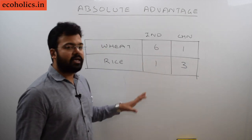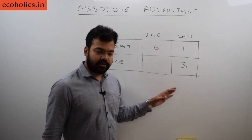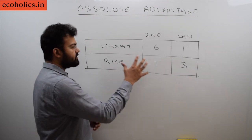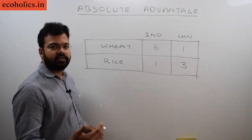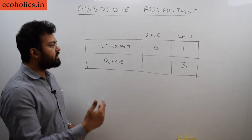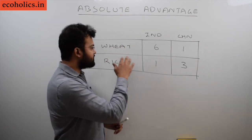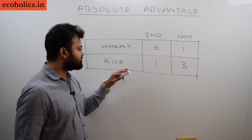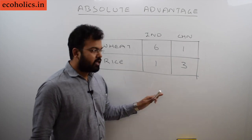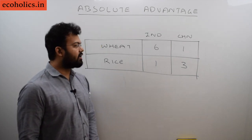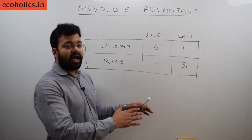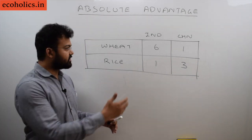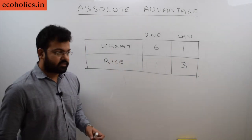These are hypothetical numbers. From this example, we can clearly say that India has an absolute advantage in wheat, and China has an absolute advantage in rice. So these two countries each have absolute advantage in their respective commodities.